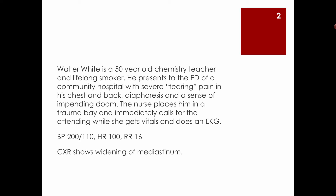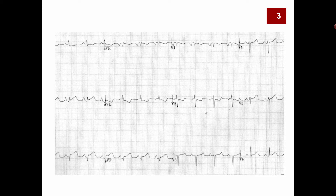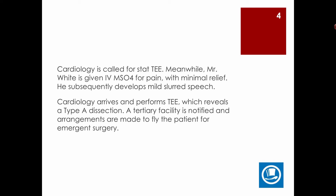Vitals show blood pressure 200/110, heart rate 100, respirations 16. Chest X-ray shows widening of the mediastinum. The EKG shows ST depression, T-wave inversion, and some ST elevation in the inferior leads — non-specific changes that don't fit a clean acute MI picture. Cardiology is called for a stat transesophageal echocardiogram. Mr. White is given morphine without relief and then develops slurred speech.